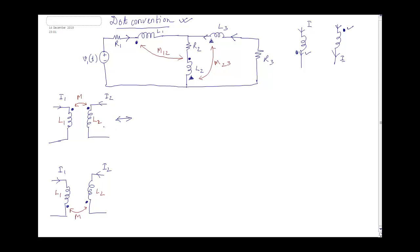Based on that, we have what is called the dot convention. The dot convention transforms the circuit into one which can be solved easily. Wherever the dot is, we draw a dependent source at that position. So with the dot on top for both inductors, we draw the dependent source there. The inductors are written as jωL1 and jωL2.